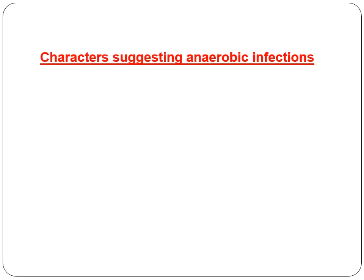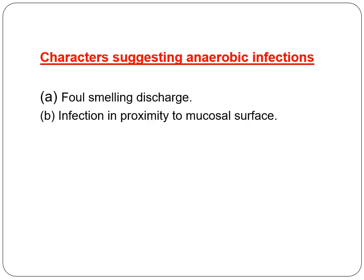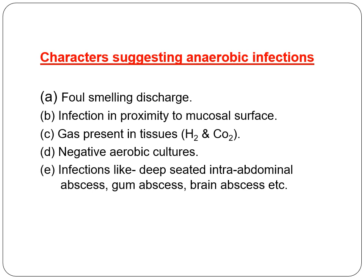What clinical characters suggest anaerobic infection? Foul-smelling discharge is favourable for suspected anaerobic infection. Infection proximal to a mucosal surface is another indicator. If gas is felt — crepitus, a sound heard on applying pressure — as noticed in gas gangrene, anaerobic infection should be suspected. If aerobic cultures are repeatedly negative and the infection is not corrected by usual antibiotics, anaerobic bacteria may be the cause. Deep-seated intra-abdominal abscess or gum abscess — where pus accumulation lowers oxygen tension — strongly supports the growth of anaerobic bacteria.